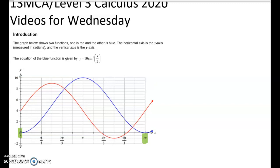We're given the equation for the blue function. So the blue function is not a straight up sine or cos function, it's y equals 10 times sine squared of x over 2. So you can guess what we're going to have to do first. We're not given the equation of the red function.